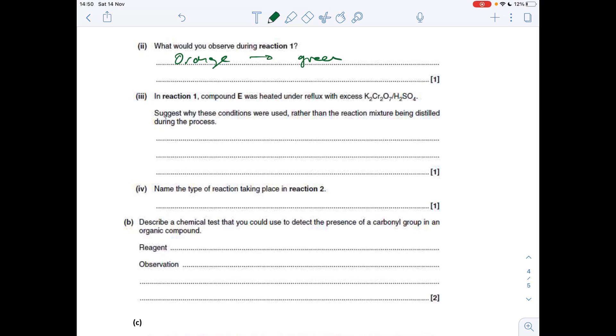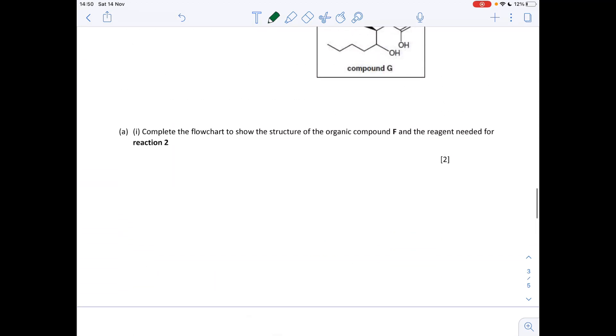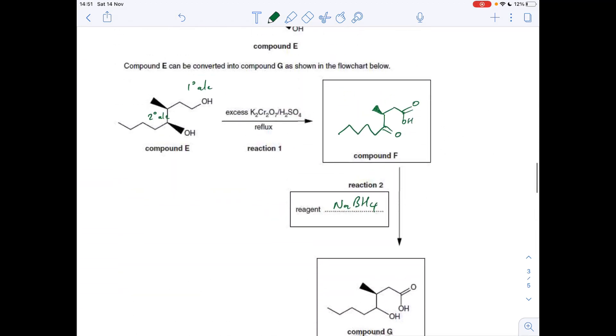I'll suggest why these conditions were used. So why is reflux used rather than the reaction mixture being distilled? Well, if we'd distilled compound E, you would have got an aldehyde group here. It still has the ketone there, but you wouldn't have got the carboxylic acid group. So the reflux ensures that you get the carboxylic acid group that you want, because obviously it features in the final product, G.